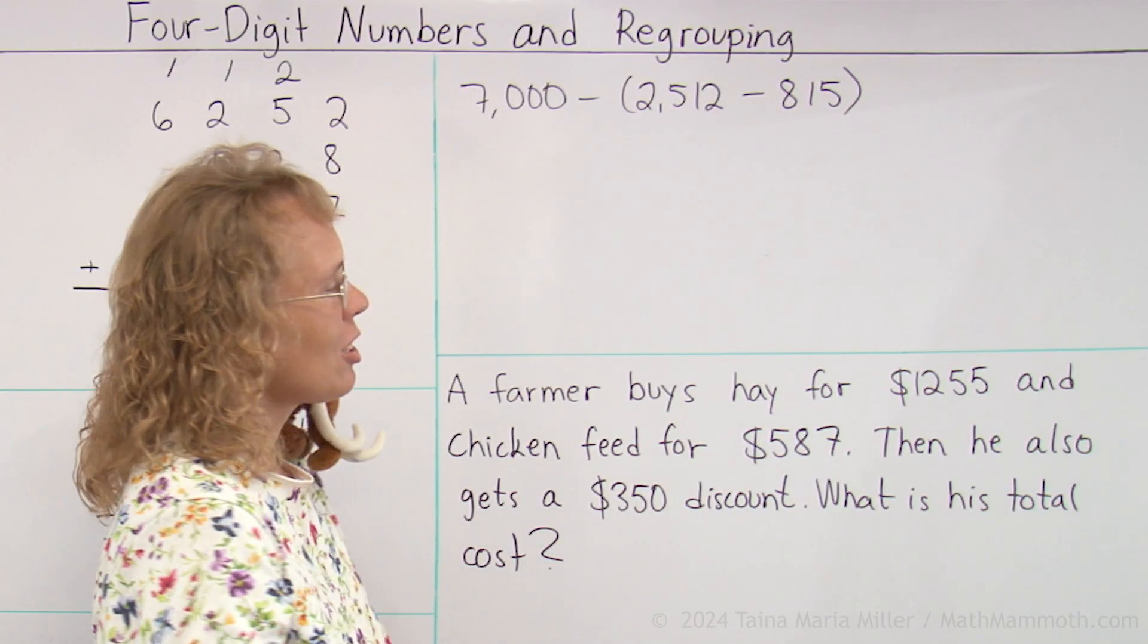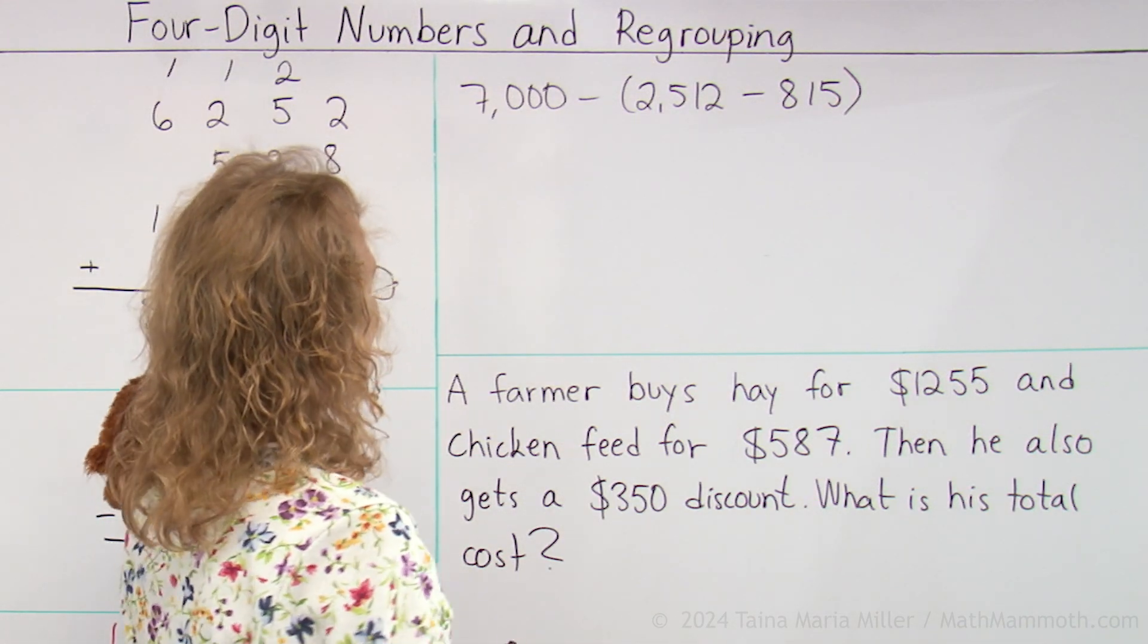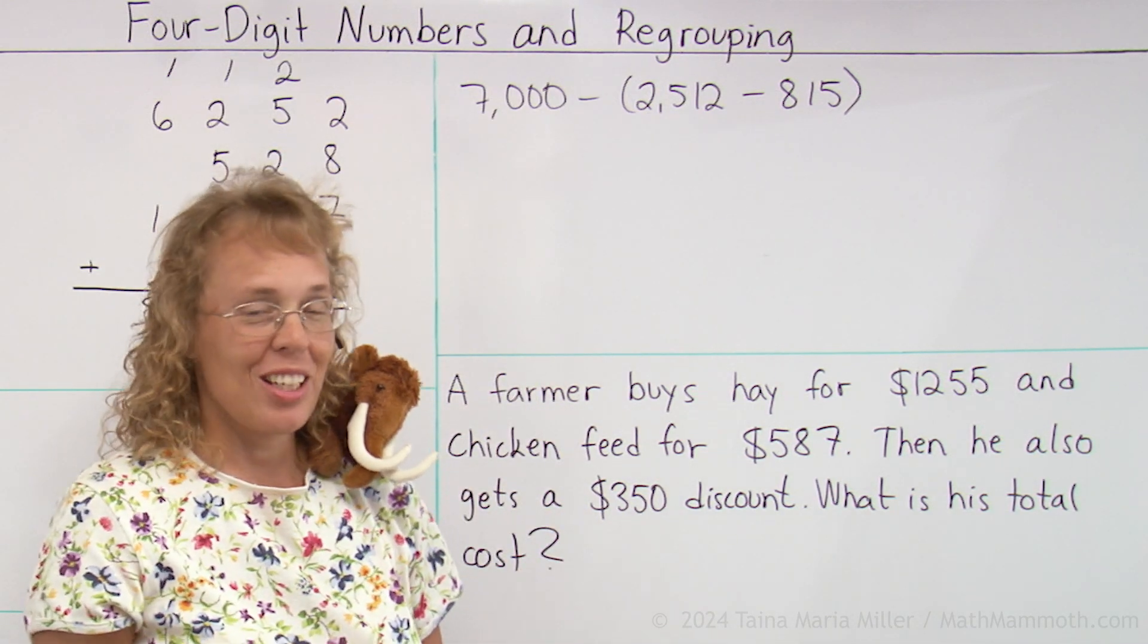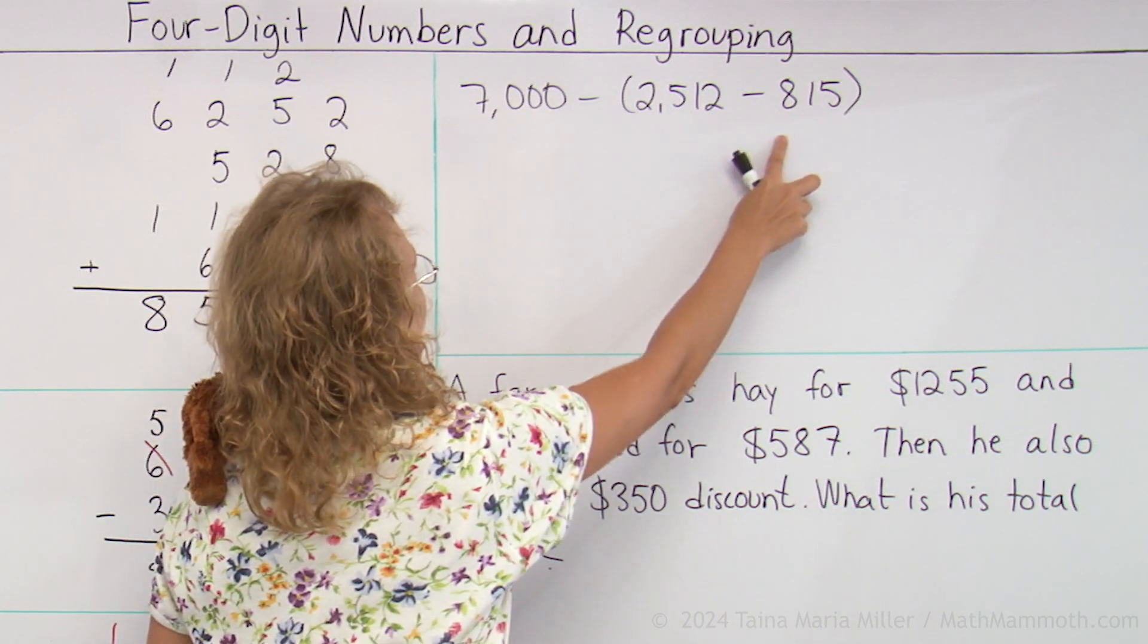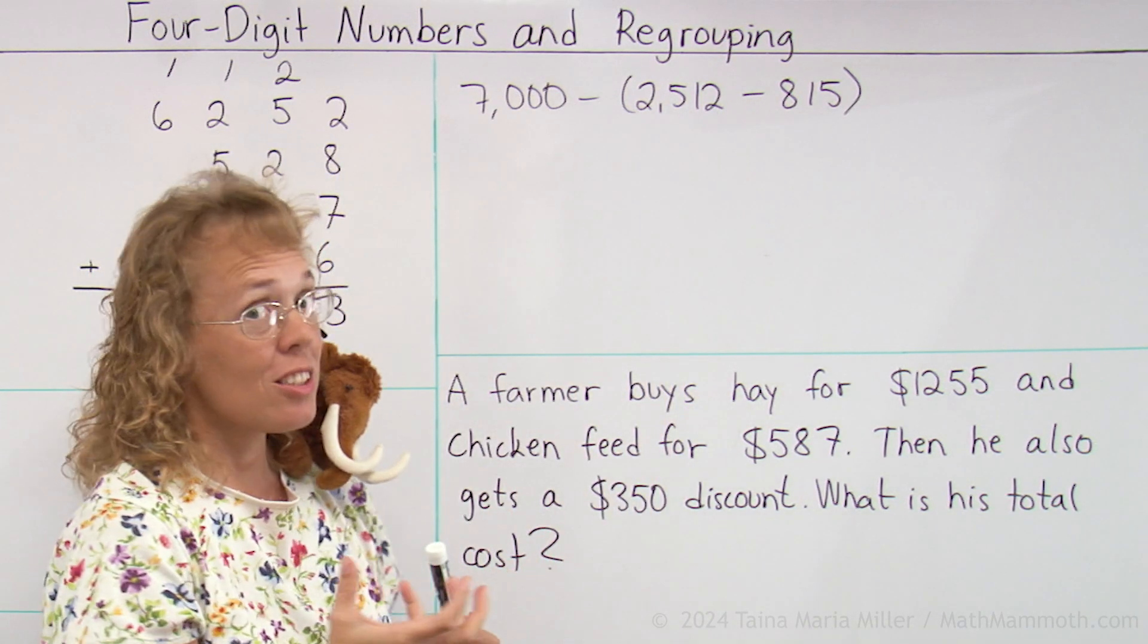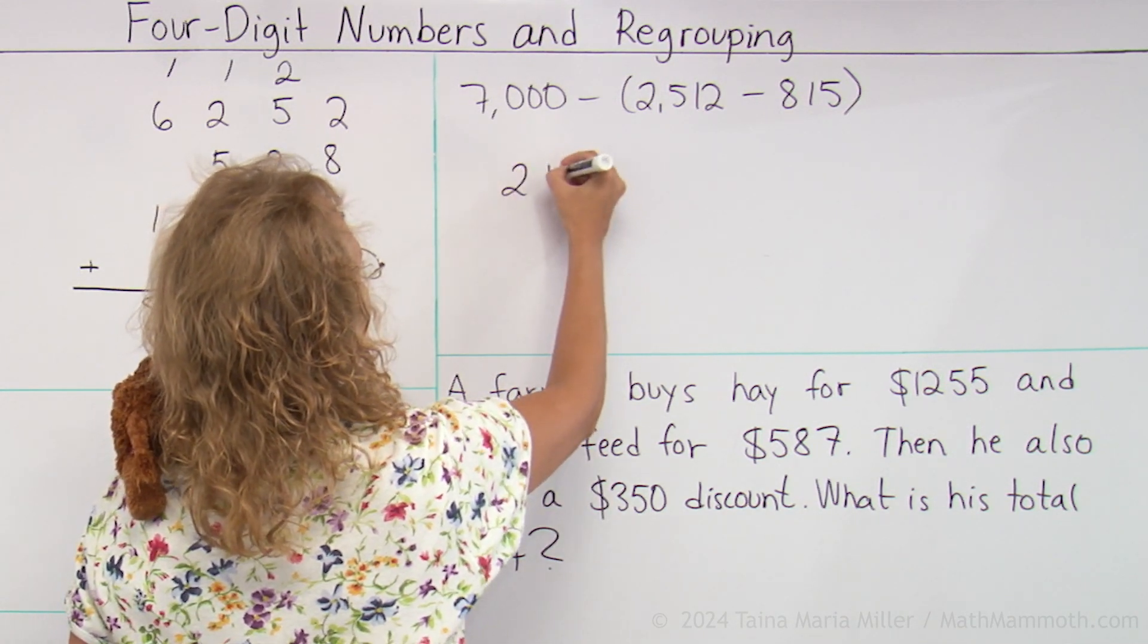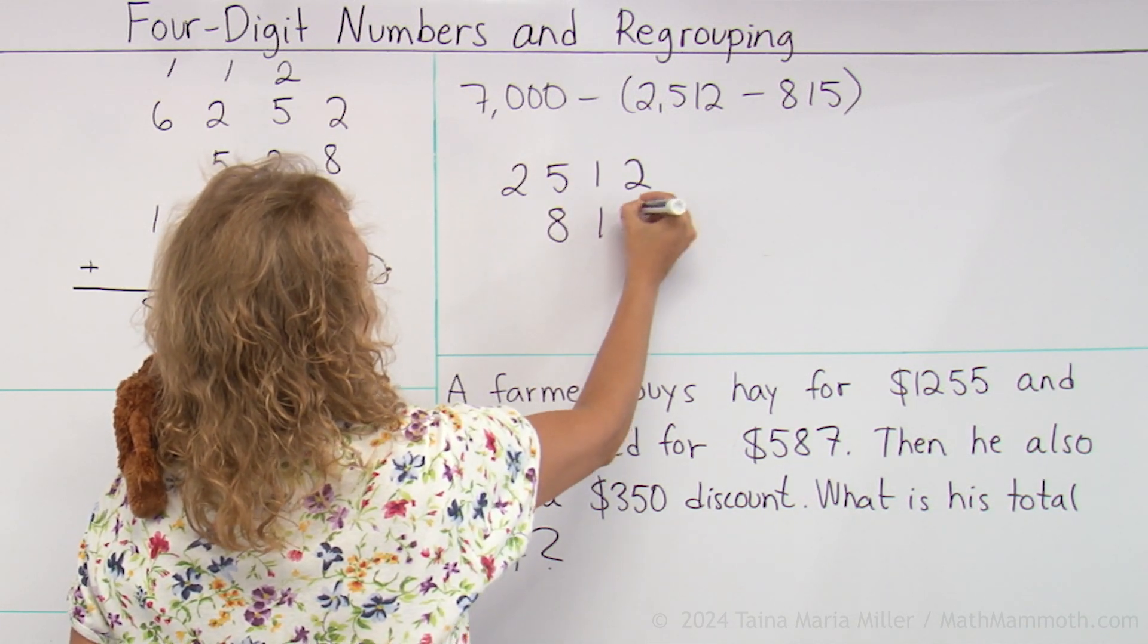Here are two subtractions. How do we solve that one? Now, in subtraction, you cannot put all three numbers like that under each other and do something like you could in addition. In subtractions, you have to do one subtraction at a time. And we need to start with this particular one, because it's in parentheses. So, two thousand, five hundred, twelve minus eight hundred, fifteen.